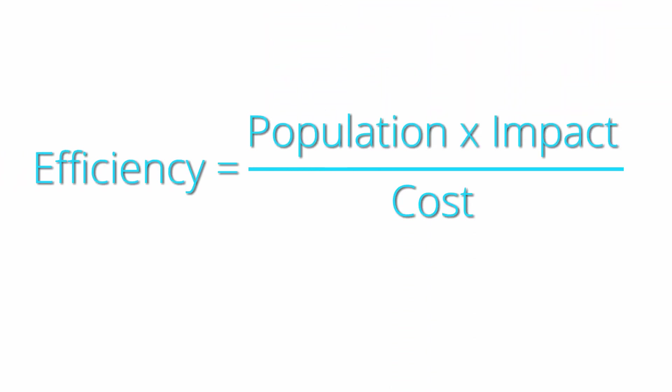Now let's talk about the efficiency equation and how it might have helped us evaluate if this test would have been successful or not. The efficiency equation has three different parts. It's efficiency equals population times impact divided by cost.